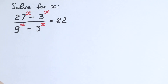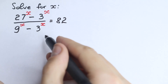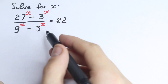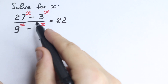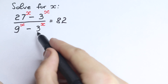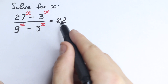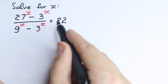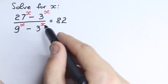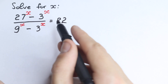Happy to see you here. Welcome back to my channel, Higher Mathematics. We have a really interesting exponential equation today: 27 to the x minus 3 to the x, all over 9 to the x minus 3 to the x, equal to 82. I will solve it here in just two minutes, so I hope you will enjoy this video.